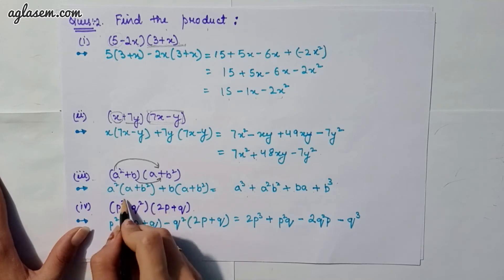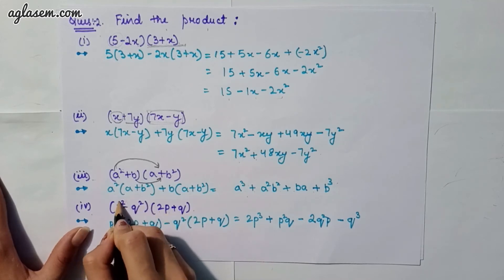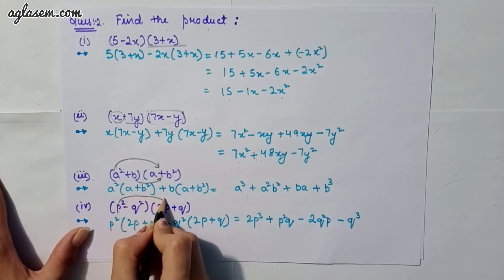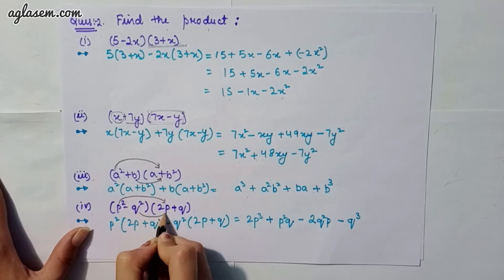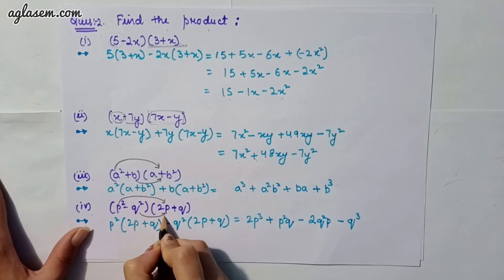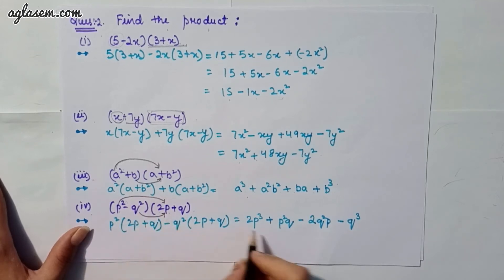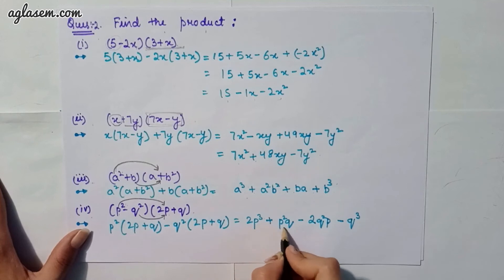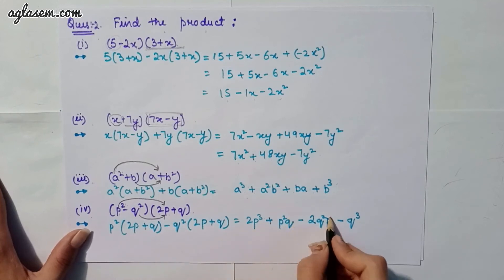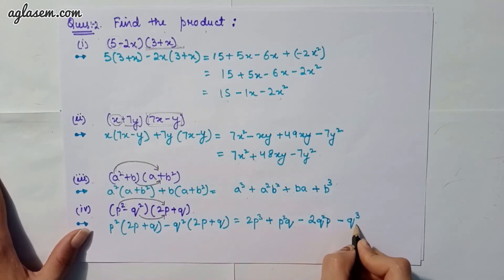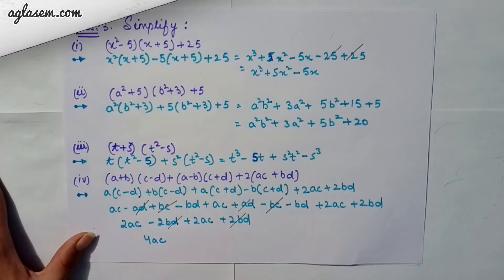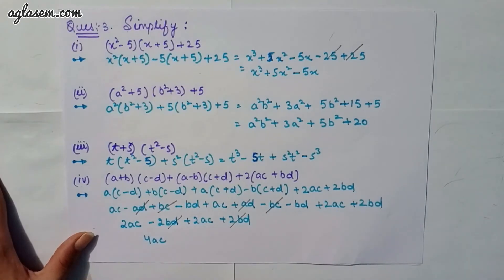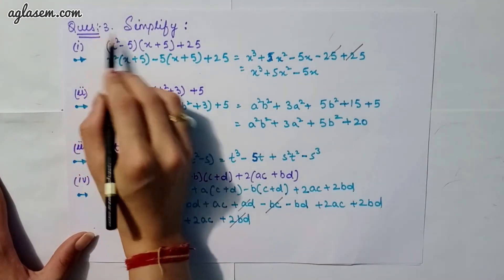The fourth part says (p² − q²) and (2p + q). Again, p² will be multiplied by this whole and minus q² will be multiplied by this whole. So our answer will be 2p³ + p²q − 2pq² − q³.